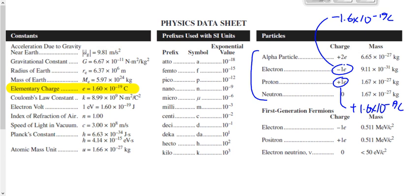An alpha particle would be 2 times the elementary charge, or 3.2 times 10 to the minus 19 coulombs. By the end of the year, you're probably going to remember the charge of an electron because we'll use it so often. But if you don't, you know where to find it — it's a two-stepper. Look on the right-hand side, minus 1e, and then we know that's minus 1 of the elementary charge that appears on the left-hand side.